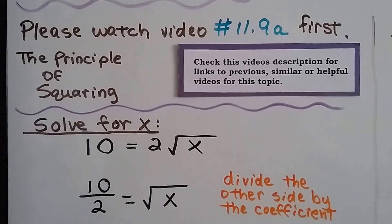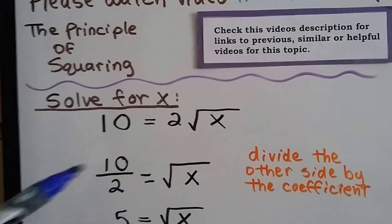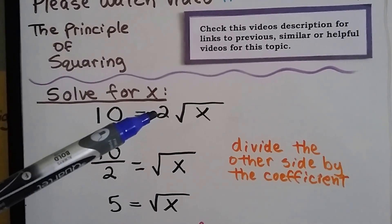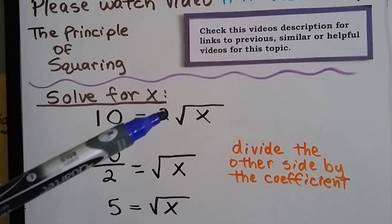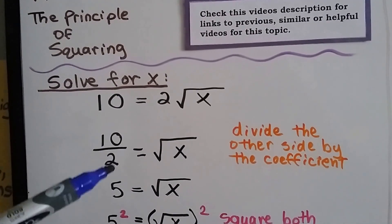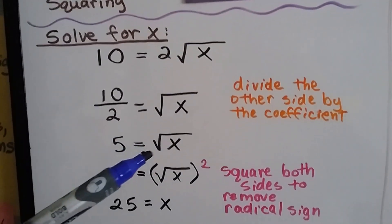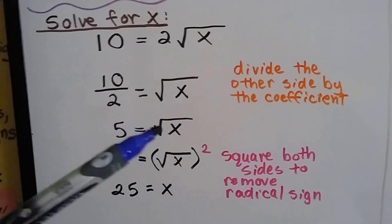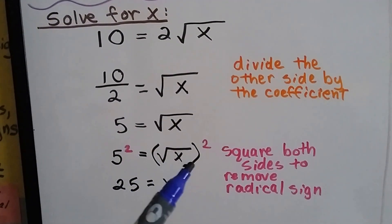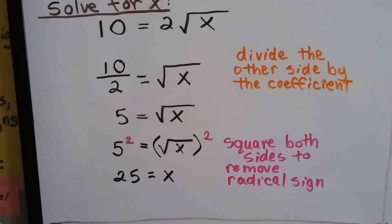To solve for x, if we have 10 equals 2 times the square root of x, we would put this 2 coefficient underneath the 10 on this side of the equal sign. We would divide the 10 by 2, which is 5, and now we have 5 equals the square root of x. We square both sides to remove the radical sign, and we get 25 equals x.